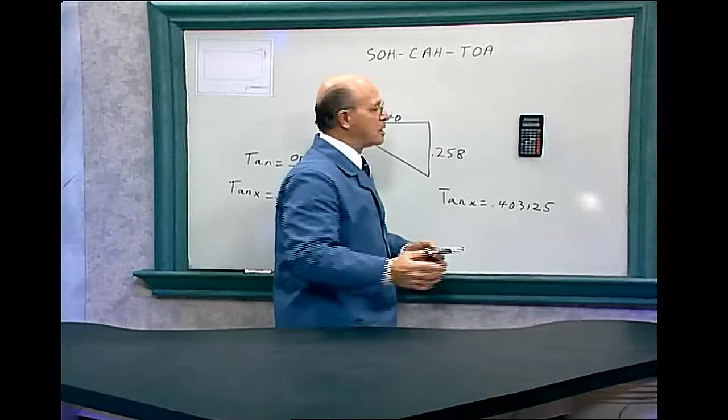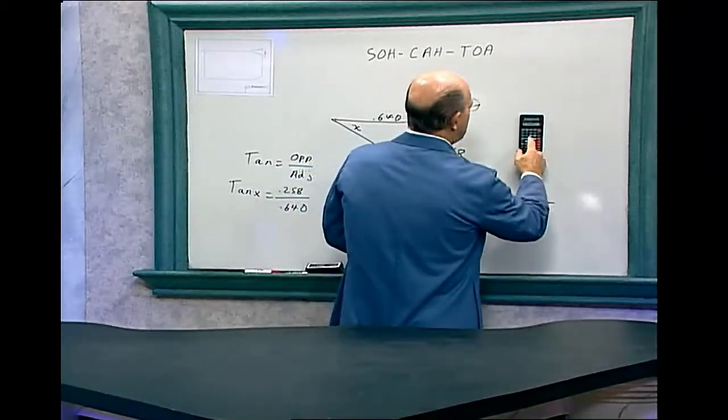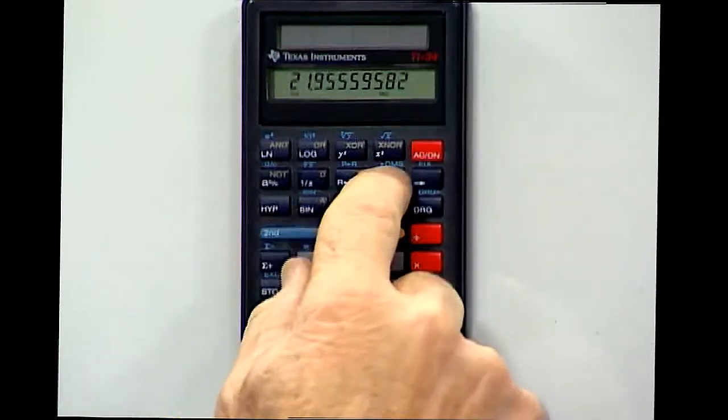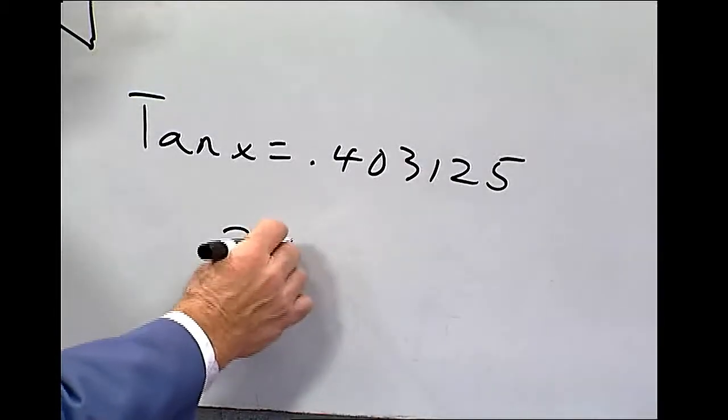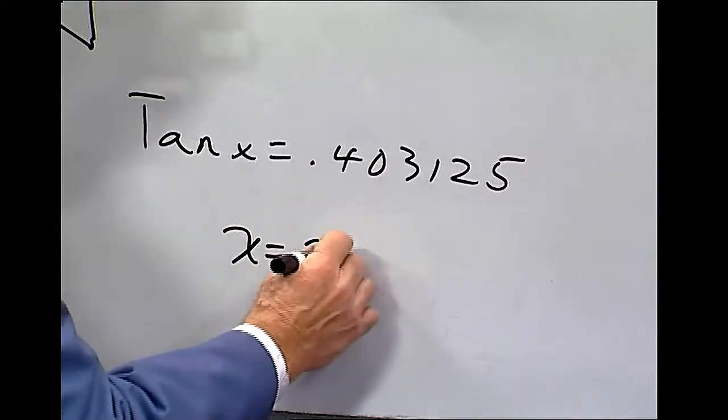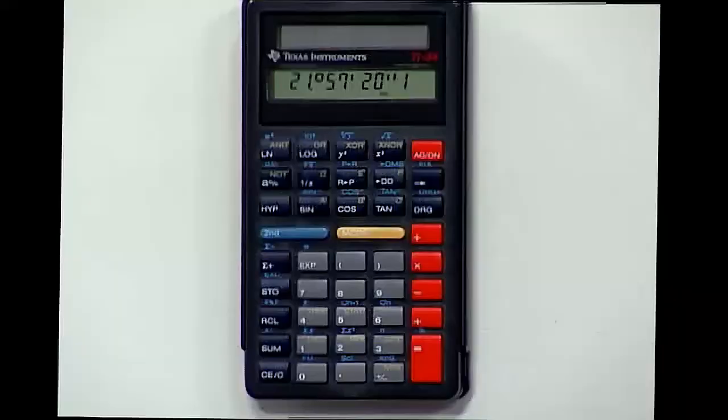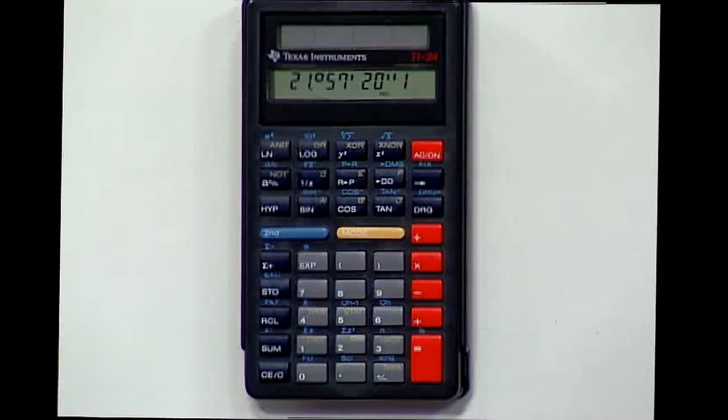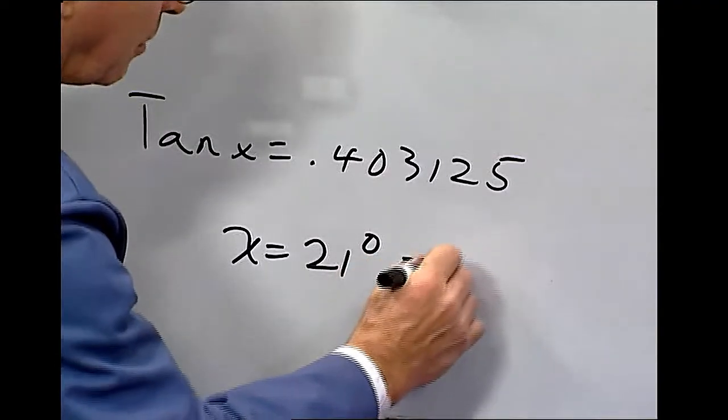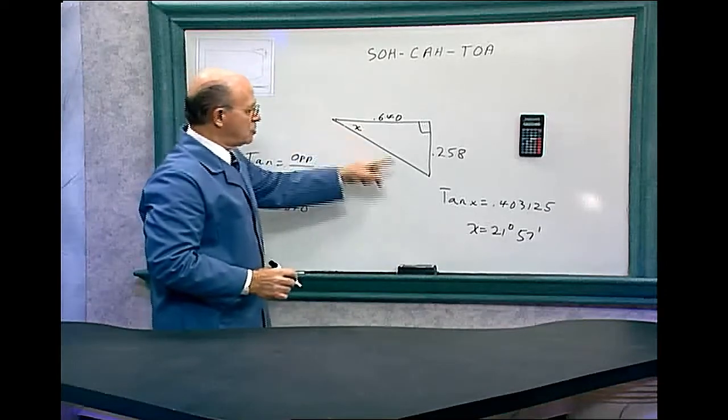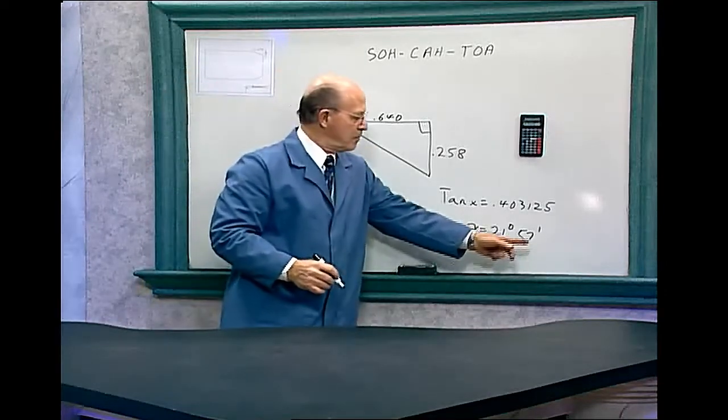So again, we hit the invert or the second key and get that. So X equals 21 degrees 57 minutes and 20 seconds. Since it's less than 30 seconds, we're going to drop the seconds and just go to the minutes. So it would be 57 minutes. So this angle over here is 21 degrees 57 minutes.